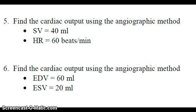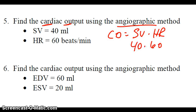Question number five is wanting us to find the cardiac output using the angiographic method. The cardiac output formula using the angiographic method is simply stroke volume times heart rate. So it would be 40 times 60, which equals 2,400 ml.